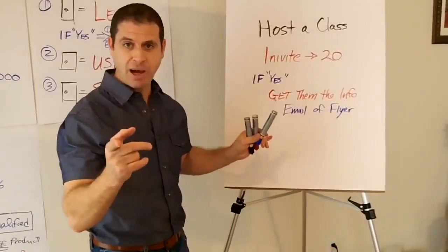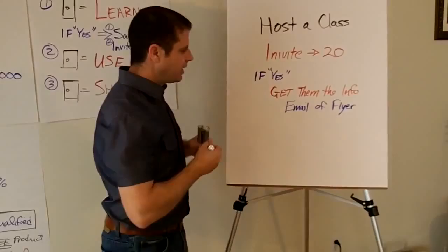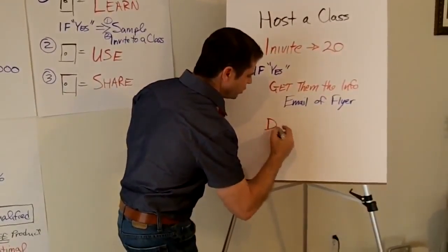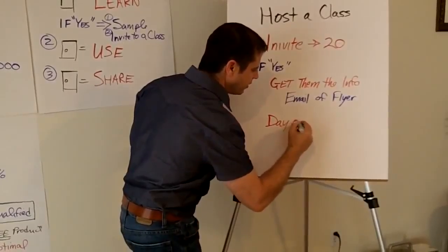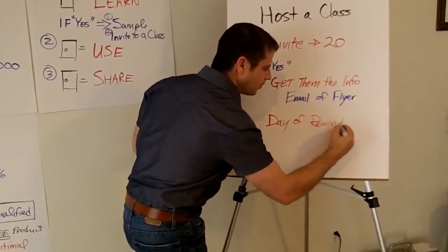Now what this does is this gives you a second point of contact. So you've invited them personally and then if yes, then you say great, I'll send you an email with all the information or I'll drop by a flyer. Now this gives them the second reminder of what's going to happen.